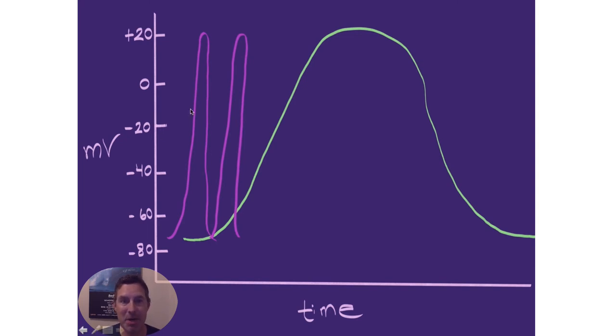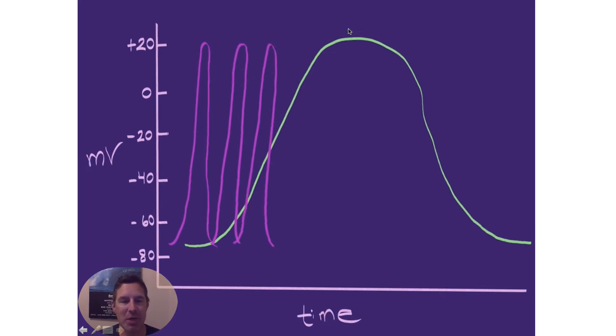And keep in mind, this is before we even get full contraction. And we can have another one. Keep in mind, once you have a depolarization event, you cannot have another depolarization event until that cell has fully repolarized.